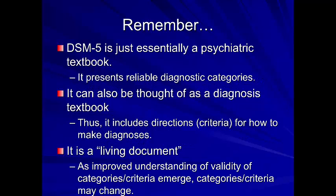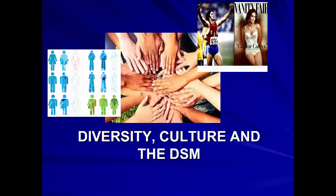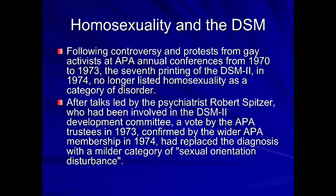The DSM-5 is really a psychiatric textbook presenting a common language, but it can also be thought of as a diagnosis textbook that talks about how we can think about these disorders. It's a living document — this is not the final version. One important issue highlighted throughout this course is how diversity and culture impact diagnosis. We are each individual based on our sexuality, gender, race, ethnicity, culture, religion, and age — all these factors influence how symptoms are presented across the lifespan and across the world.